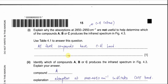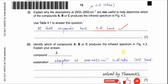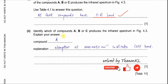All three compounds have the C–H bond — that is the answer as shown in the mark scheme. For the last part, identify which compound produces the IR spectrum in figure 4.3. The answer is compound A, because the spectrum shows absorption at 2200–2250 cm⁻¹ wavenumber, indicating the presence of a C≡N triple bond.